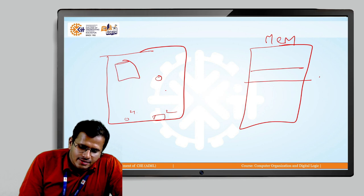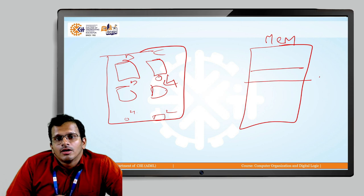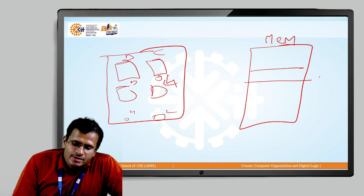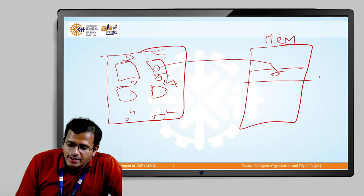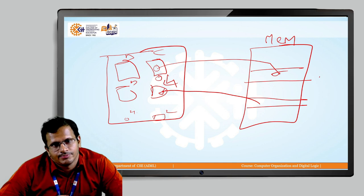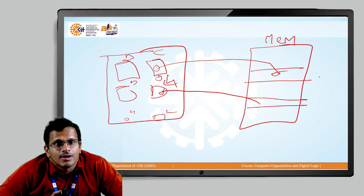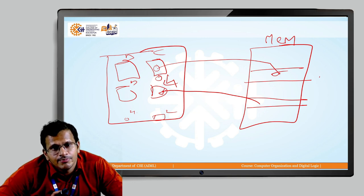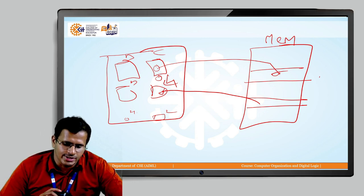Again, there are registers B, C, D, E, and H, L. There will be the possibility where the content from one of the registers should be passed to a memory location, or the content from the memory location should be passed to a register. So basically, a data transfer instruction is passing content from register to register, or transferring content from a register to memory, or from memory to registers.